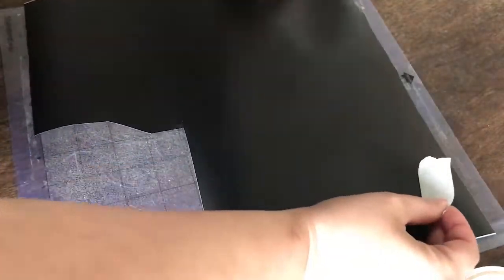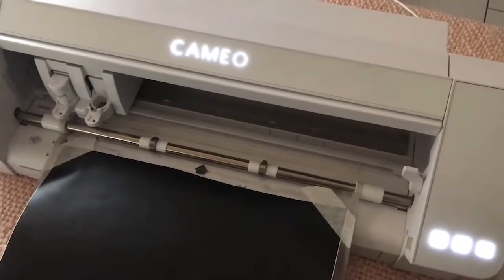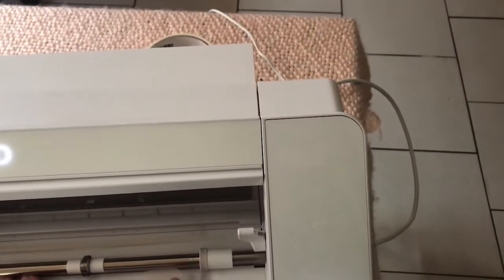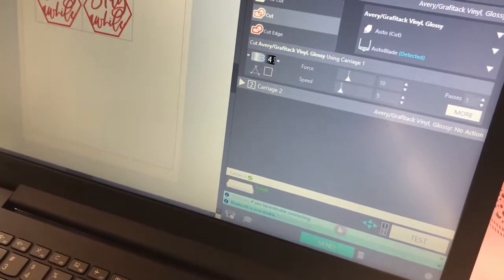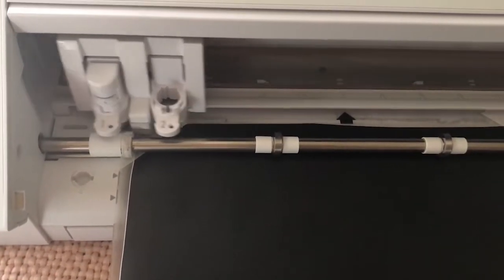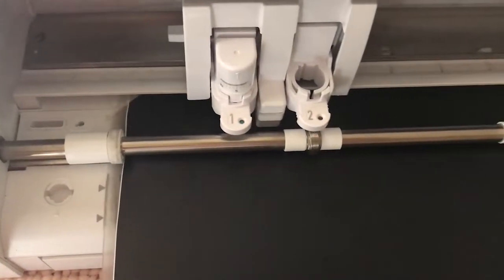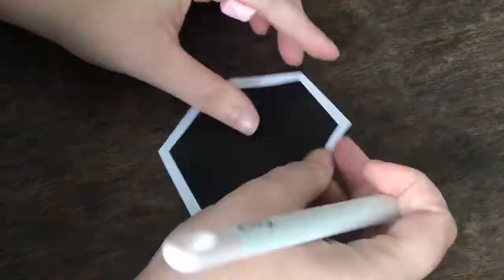So I'm just going to place my vinyl sheet on my cutting mat and yes I need a new cutting mat, mine has lost its stickiness so I'm just going to use some masking tape to tape down my vinyl sheet. Once that's done I'll load my cutting mat in my machine and click on the Send icon to send the design to be cut.